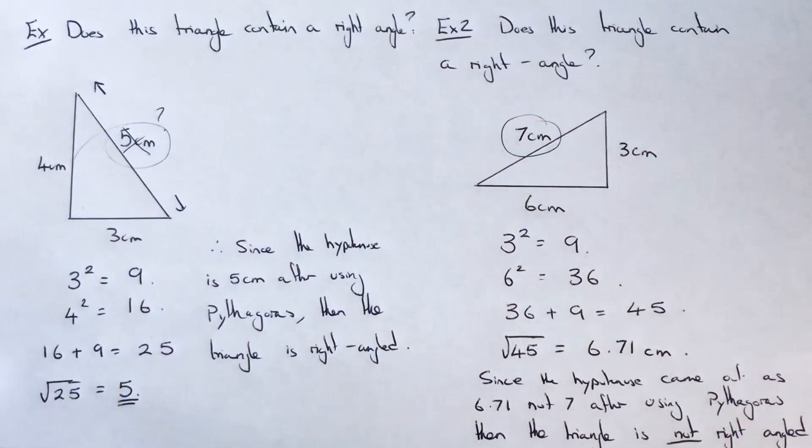That is all you have to do then to prove if a triangle contains a right angle. So hope you liked this video. If you did, like and subscribe, and I'll see you next time. Bye bye.